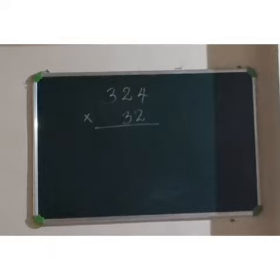Next, multiplication of a 3-digit number by a 2-digit number. We have to multiply 324 into 32.